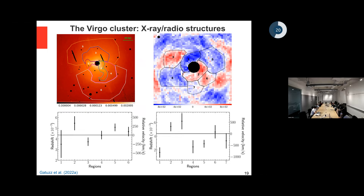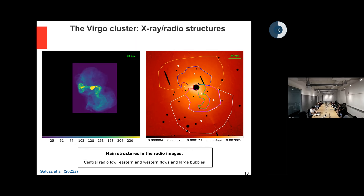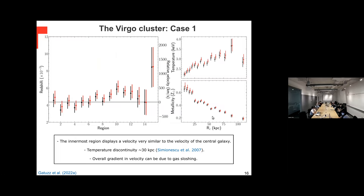Regarding the velocity magnitudes: taking the right panel which is more evident, we are talking about around +100 km/s for the red-shifted gas and −700 km/s for the blue-shifted gas. For gas sloshing, the left panel shows velocities for different rings and the gas sloshing velocities are around 500 km/s. In the case of the Virgo cluster, the blue-shifted gas has really high velocity compared to the gas sloshing velocity, but the magnitude is within the same order — not crazy, not 10 times different.